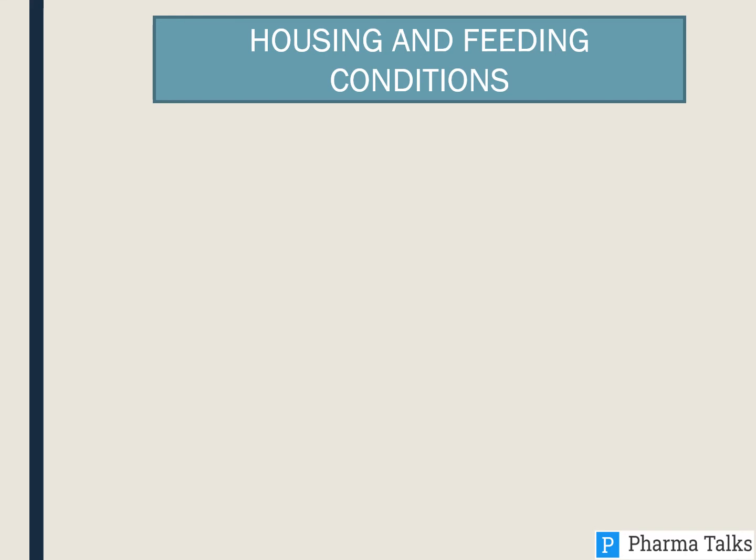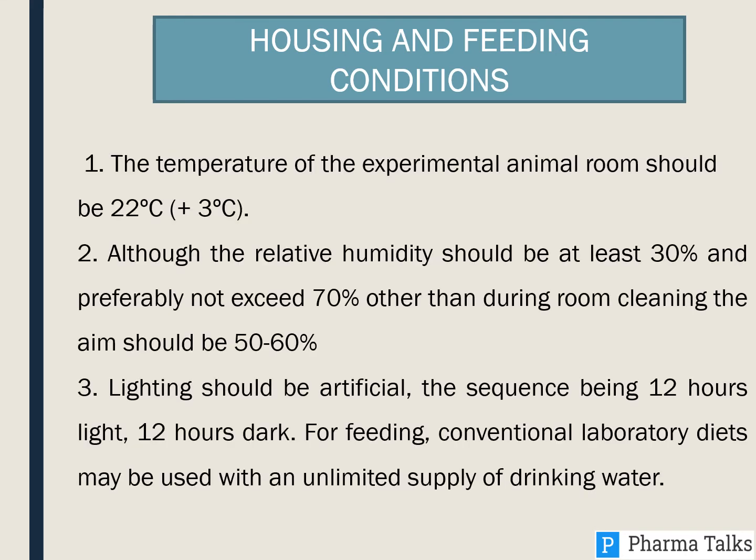Housing and Feeding Conditions: The temperature of the experimental animal room should be 22°C ± 3°C. The relative humidity should be at least 30% and preferably not exceed 70%. Lighting should be artificial, with a sequence of 12 hours light and 12 hours dark. For feeding, conventional laboratory diets may be used with an unlimited supply of drinking water.